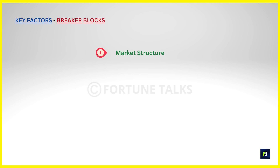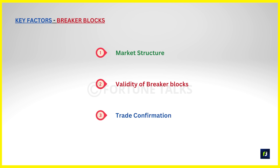Key factors to consider when trading breaker blocks: 1. Market Structure — identify the current market structure including market direction, supply and demand areas, higher timeframe key levels, and liquidity areas. 2. Validity — breaker blocks are created by a run of liquidity before the market structure shift, so look for sharp moves with fair value gaps between the wicks creating inefficiency. 3. Confirmation — wait for confirmation before entering a trade, which can come in the form of price action signals, candlestick signals, or volume.